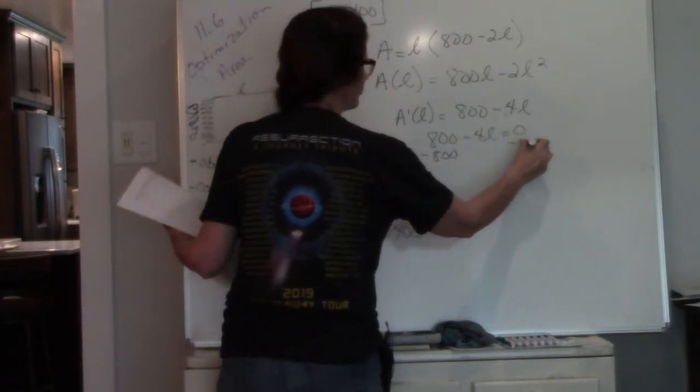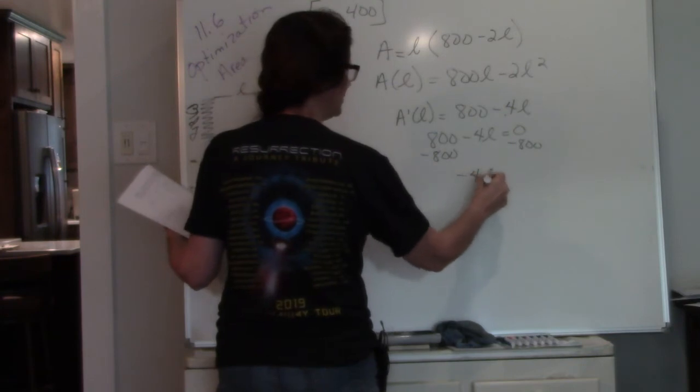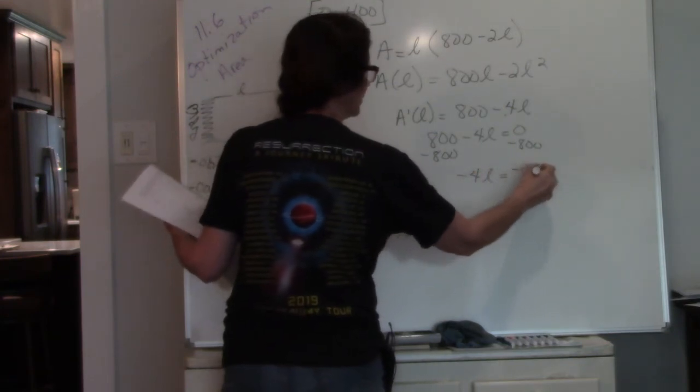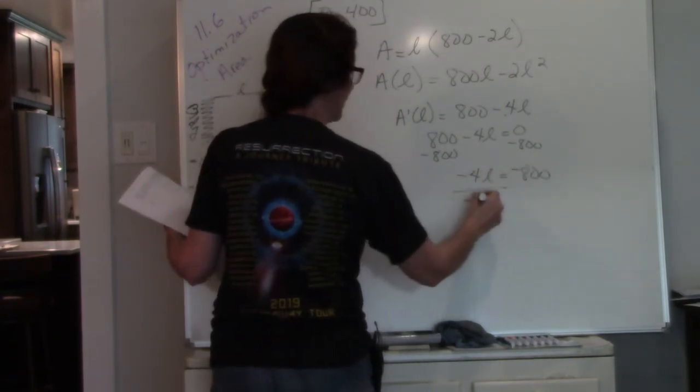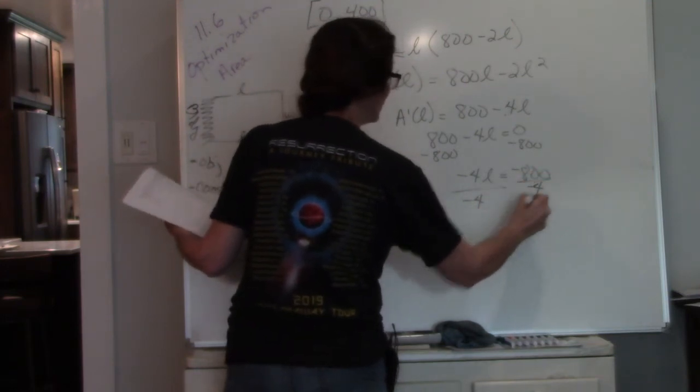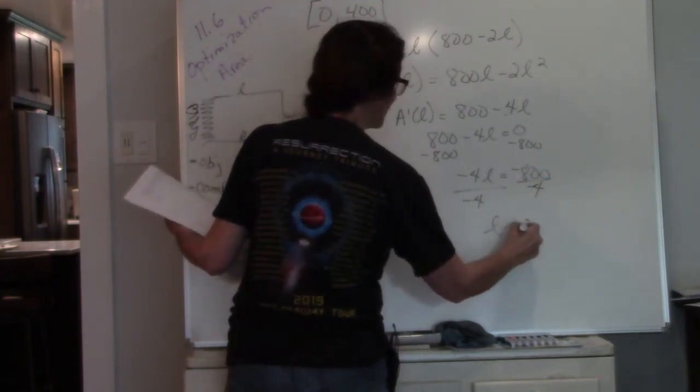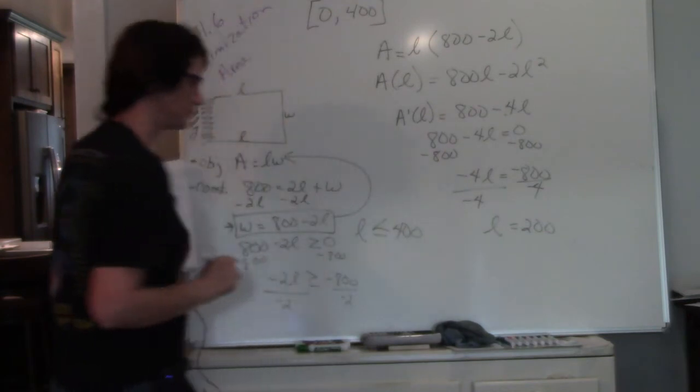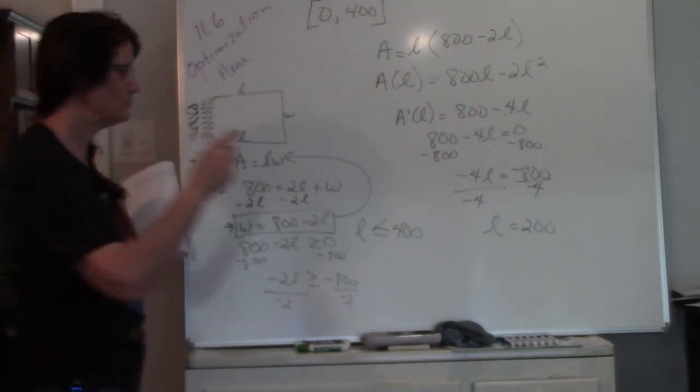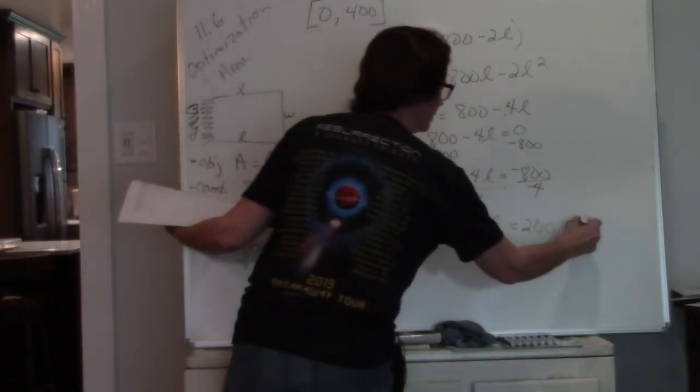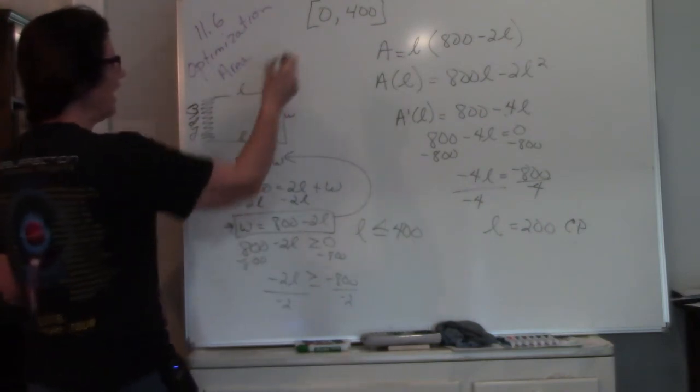So I have to subtract 800 from both sides, divide both sides by negative 4, so my length is going to be 200.